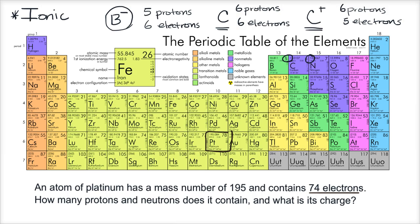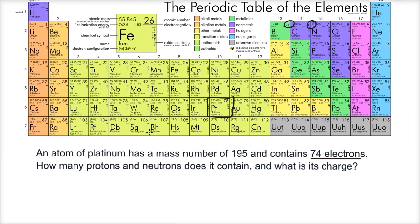All right. So let's think about this a little bit. So we're dealing with platinum. So by definition, platinum has 78 protons. So we know that. It has 78 protons. They're telling us it has 74 electrons.